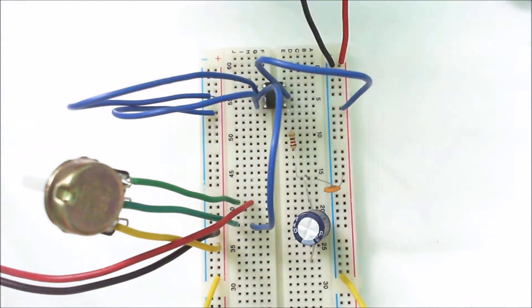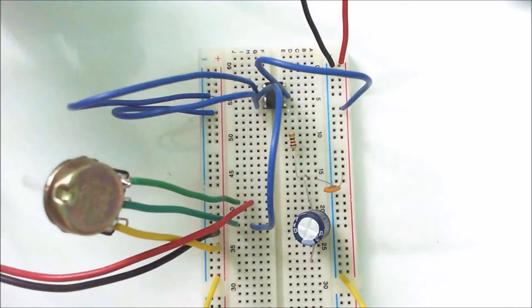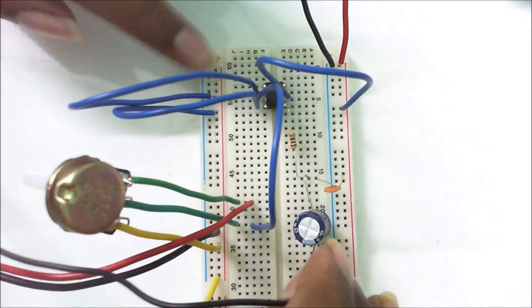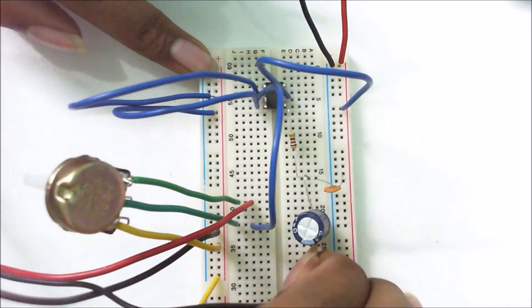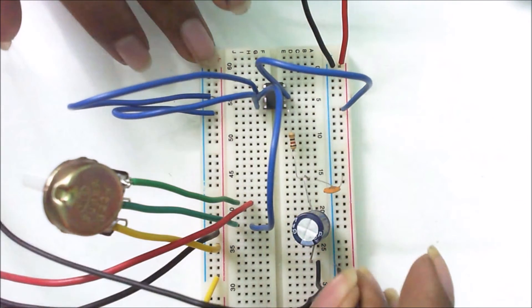Now connect the positive terminal of the 3.5mm jack to the positive terminal of the speaker and to the negative terminal of the 1000 microfarad capacitor. Connect the positive terminal of the speaker to the negative terminal of the 1000 microfarad capacitor. Connect the negative terminal of the speaker to the ground.